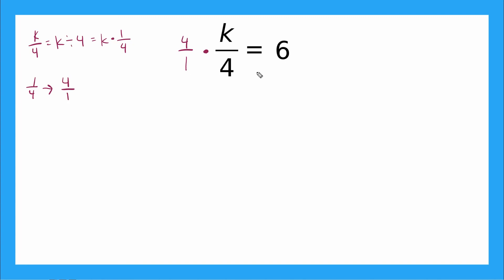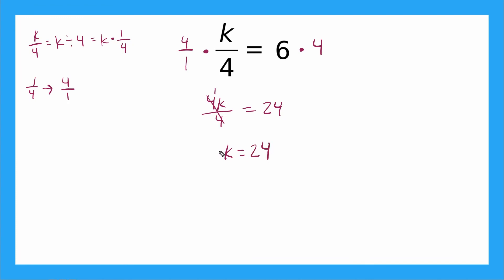So I'm going to multiply by four over one on both sides. Four over one is the same as just multiplying by four, since a denominator of one just gives us the number on top. I end up with four K over four equals six times four, which is 24. In my fraction, the fours cancel out to just one, so I don't write the coefficient — K is equal to 24. That's my answer.